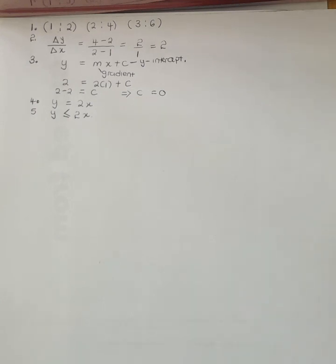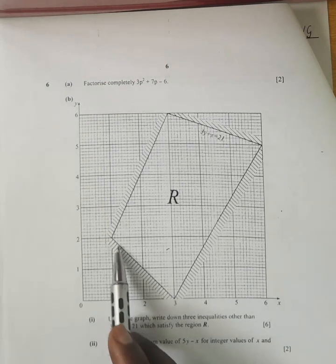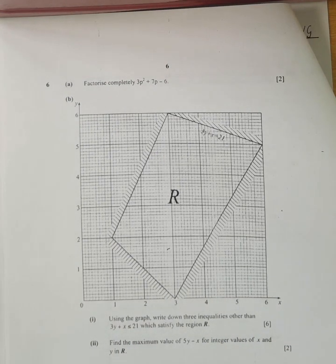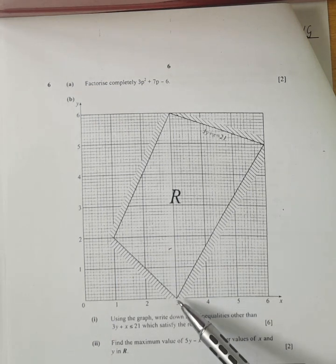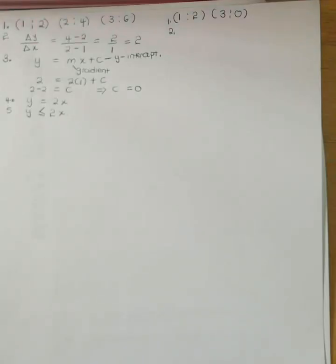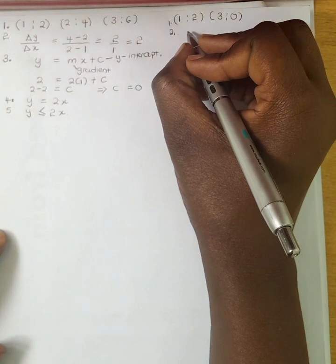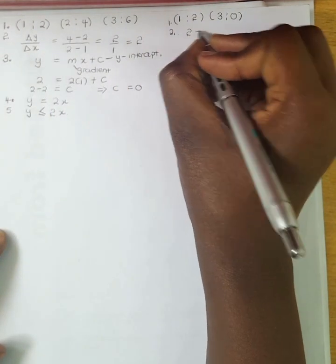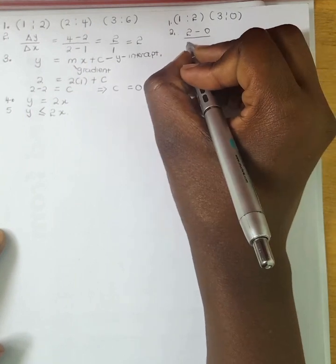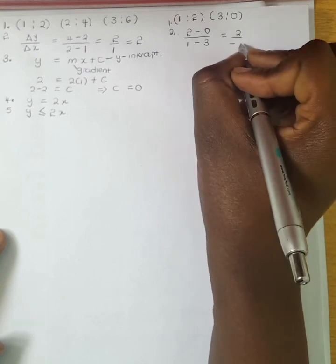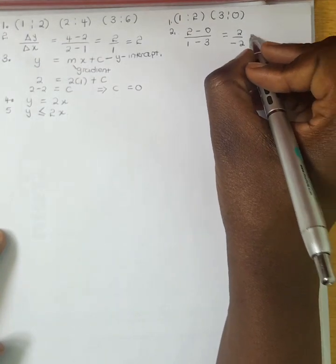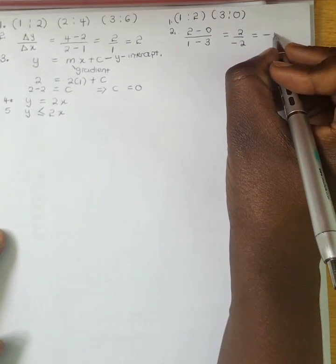We want to find the inequality for another line. The coordinates along this line are 1, 2 and 3, 0. We calculate the gradient: change in Y over change in X gives us 2 minus 0 over 1 minus 3, which is 2 over negative 2, so our gradient is negative 1.